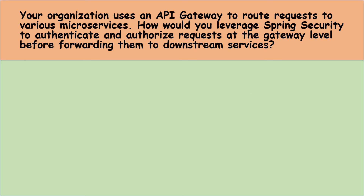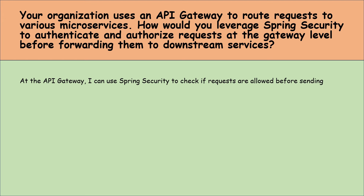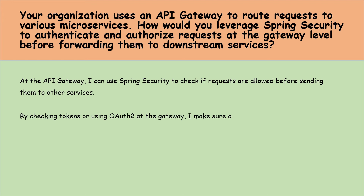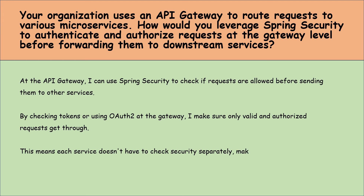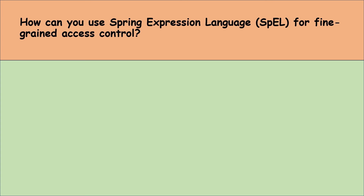Your organization uses an API gateway to route requests to various microservices. How would you leverage Spring Security to authenticate and authorize requests at the API gateway level before forwarding them to downstream services? At the API gateway, I can use Spring Security to check if requests are allowed before sending them to other services. By validating tokens or using OAuth2 at the gateway, I ensure only valid and authorized requests get through. This means each downstream service doesn't have to handle security separately, making the whole system simpler and safer.